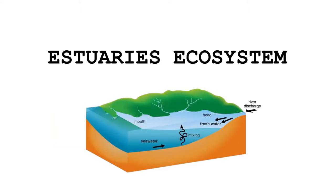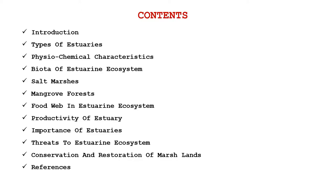In this estuary ecosystem lecture, as you can see in the diagram, we will discuss about different types of estuaries, the physical and chemical characteristics of estuaries, the estuary ecosystem, and the salt marshes present in estuaries. We will also discuss about mangrove forest, food web, estuary ecosystem productivity, different threats to the estuary ecosystem, and the conservation and restoration of marshlands.